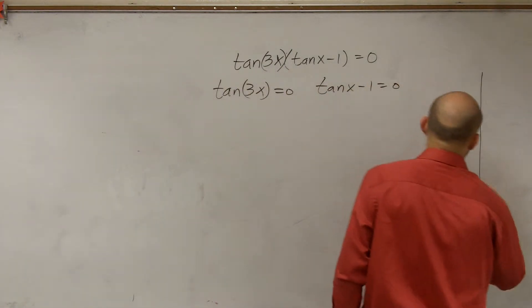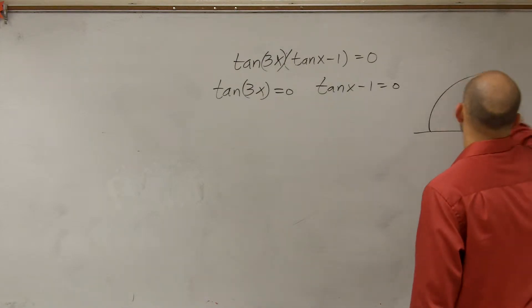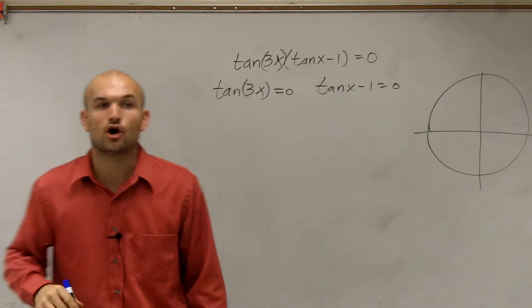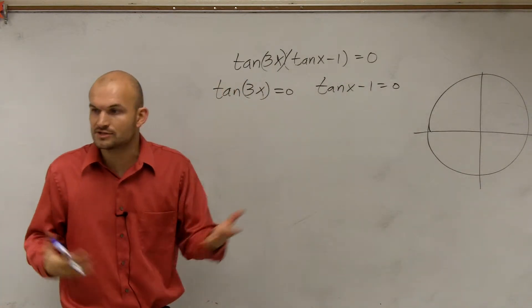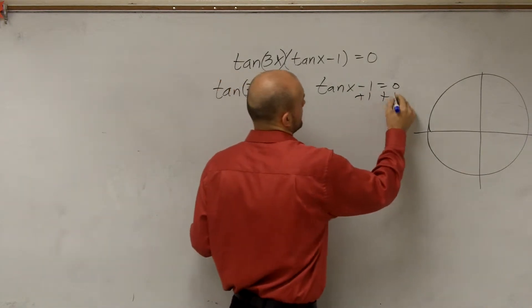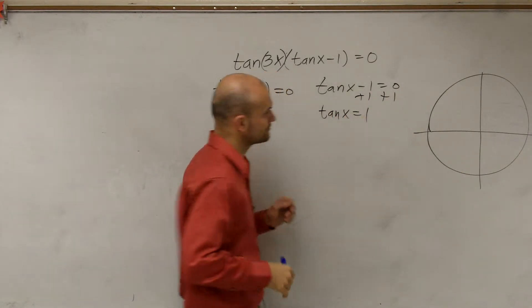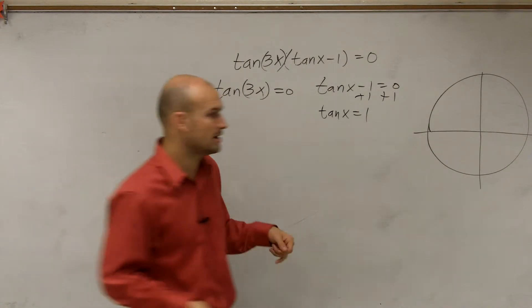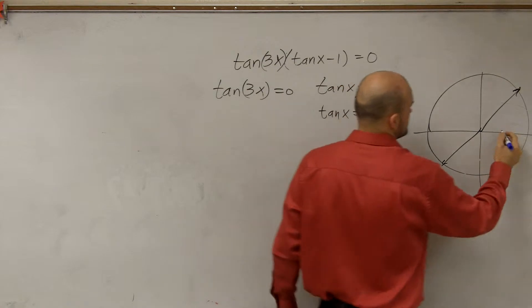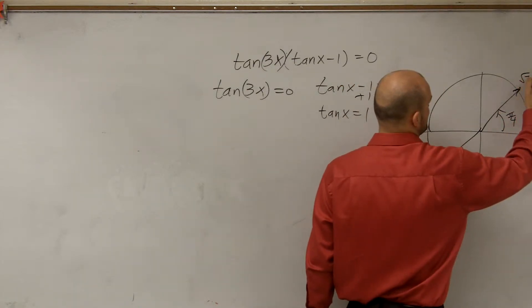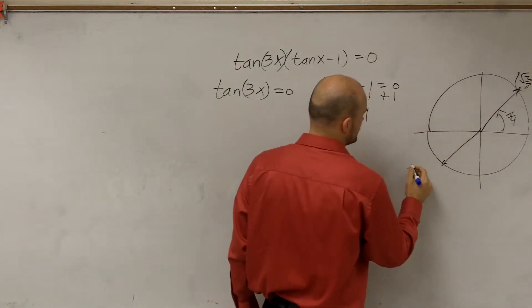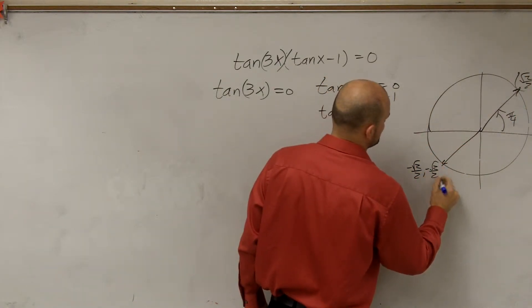We don't have a constraint between 0 and 2 pi, so we need to find all the values. Let's first find the values on the interval 0 to 2 pi. Adding 1, I have tangent of x equals 1. So when does tangent of x equal 1? There are going to be two angles. We have pi over 4, because the point is (√2/2, √2/2), and then we have the angle with the point (−√2/2, −√2/2).